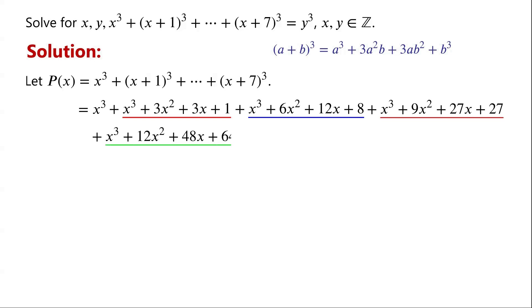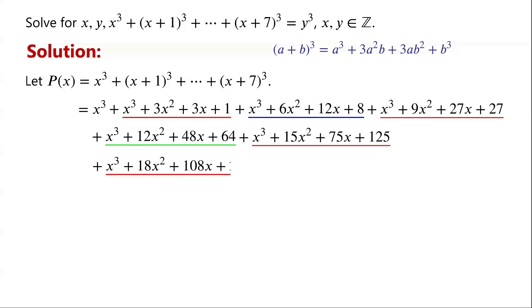(x+4) cubed equals x cubed plus 12x squared plus 48x plus 64. (x+5) cubed equals x cubed plus 15x squared plus 75x plus 125. (x+6) cubed equals x cubed plus 18x squared plus 108x plus 216. (x+7) cubed equals x cubed plus 21x squared plus 147x plus 343.